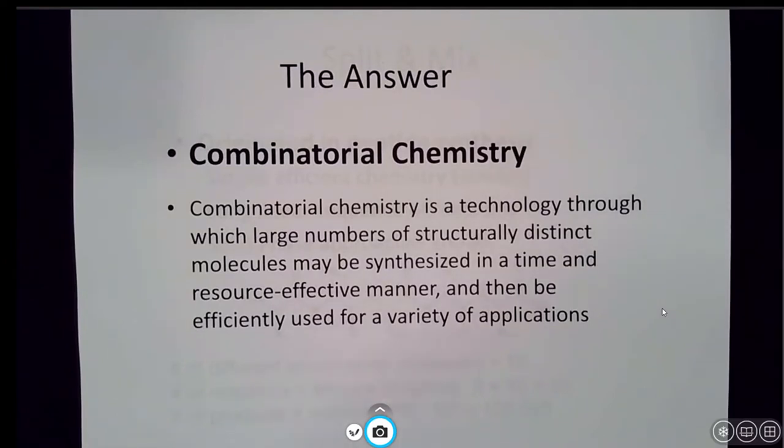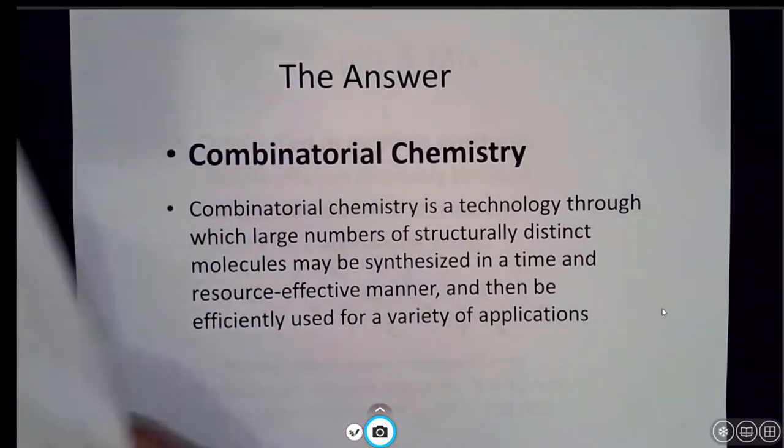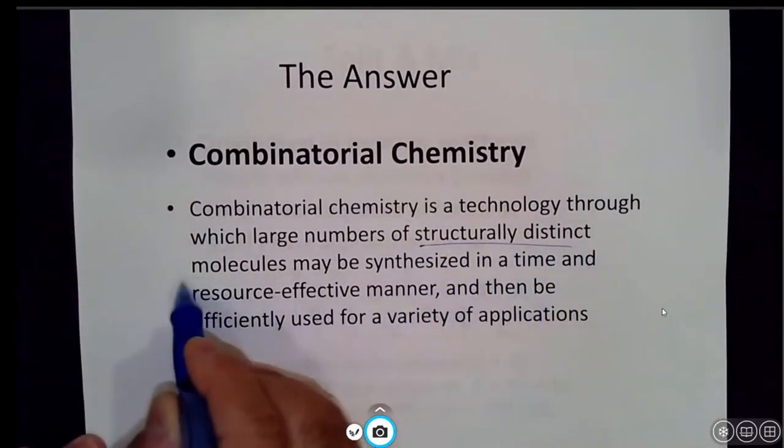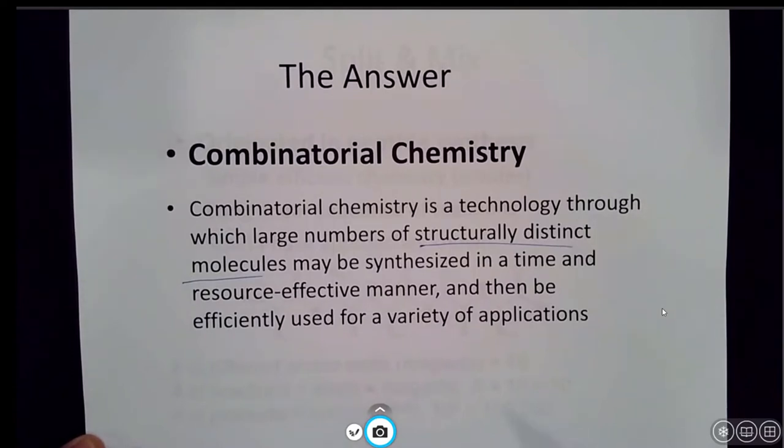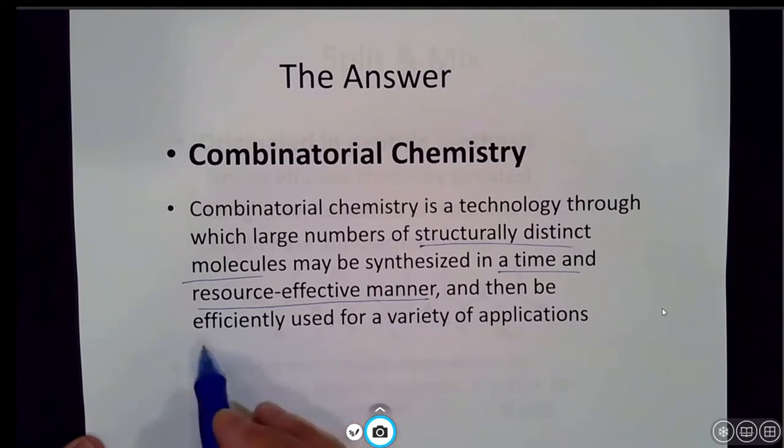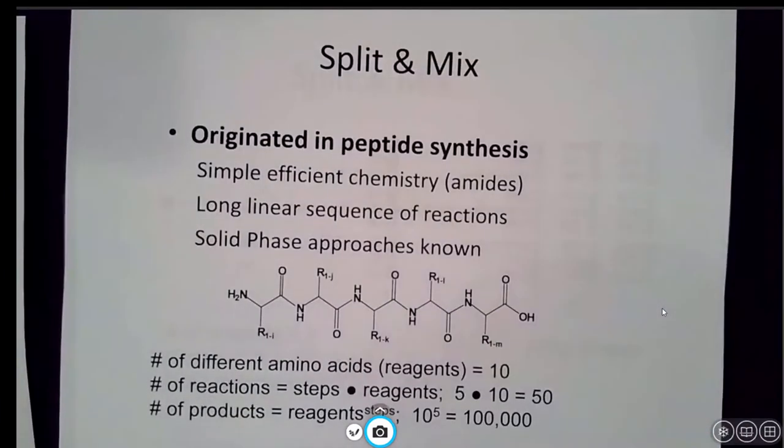Combinatorial chemistry - what is combinatorial chemistry? Combinatorial chemistry is a technology through which large numbers of structurally distinct molecules can be synthesized in a time and resource effective manner. That's really important. We don't want to be spending months making just a handful of compounds. We want to be able to synthesize dozens, hundreds, thousands of compounds in just a few days. Once we make these compounds in a time and resource effective manner, then let's efficiently use them for a variety of applications.